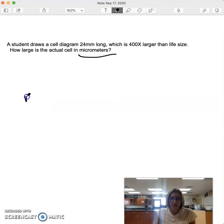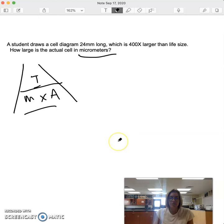I'm going to keep coming back to this fancy schmancy triangle, right? M times A under I. The triangle just kind of helps visualize and keep that in your mind. So what we've been given is the image size, right? And we've been given the magnification, so we're looking for A.